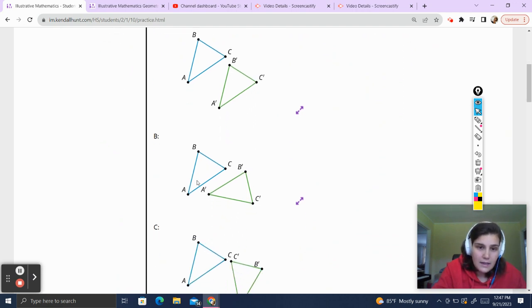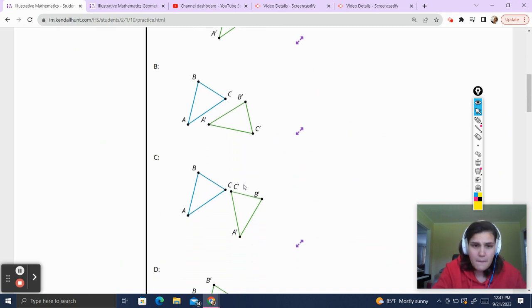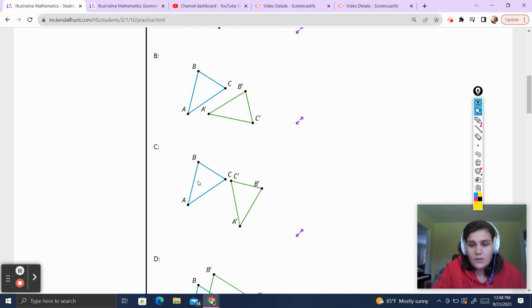This guy looks like triangle ABC moved on over and then rotated onto triangle A prime B prime C prime because that C goes there, that B goes there. He looks pretty rigid. This one looks like we've got a reflection. So it was flipped on to each other. So that also looks pretty rigid.